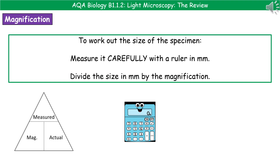The next calculation you could be asked to carry out is to work out the size of the specimen from a diagram. First, use a ruler to measure the actual image very carefully in millimeters — not just a vague estimate, actually line it up properly and double check it. Once you've got that measurement in millimeters, divide it by the magnification that the image was taken under. I've given you a little triangle in the bottom left there in case they ask you to rearrange the formula.